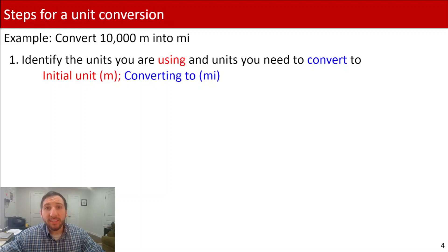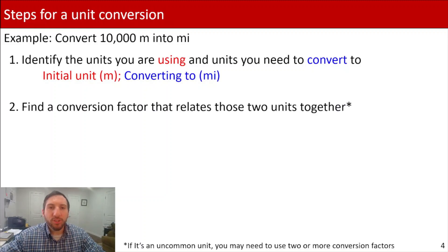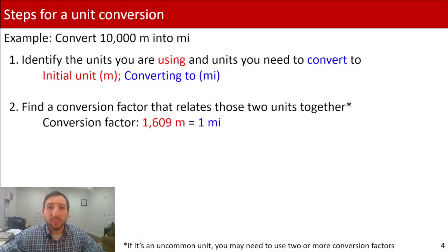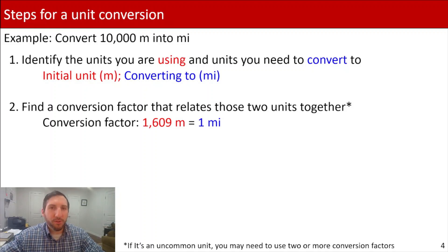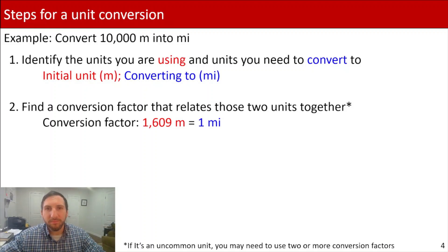The next step is to find a conversion factor that relates the two units together. We know that there are 1,609 meters in one mile. I want to give advanced warning that sometimes you will not be able to do a straight conversion from one unit to the next — you may need multiple conversion factors. That's often the case when you're dealing with obscure or uncommonly used units. So if you don't have a direct conversion factor, don't be discouraged — just find a couple of different conversion factors that can get you from your initial unit to your final unit.